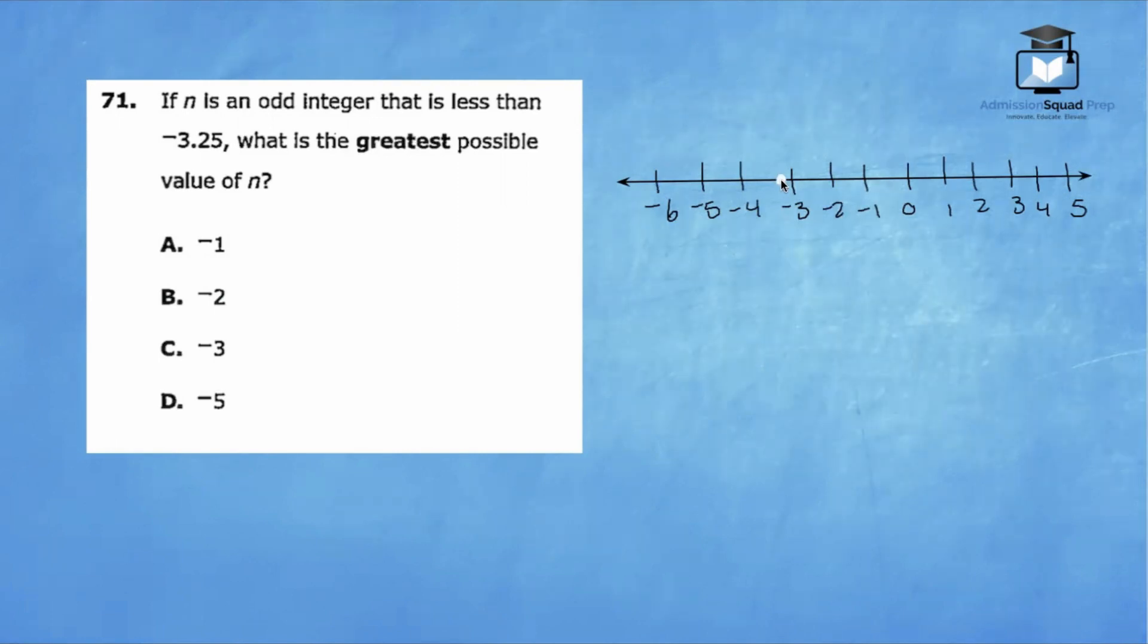This is negative 3.25. And the question is asking us to find an odd integer that is still less than negative 3.25. So that means we need to look to the left of negative 3.25. So the greatest possible odd integer that's still less than negative 3.25 is negative 5. This is the largest integer that's still less than negative 3.25. So D is the correct answer.